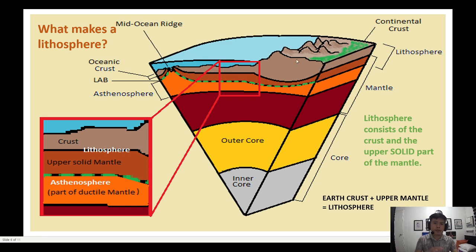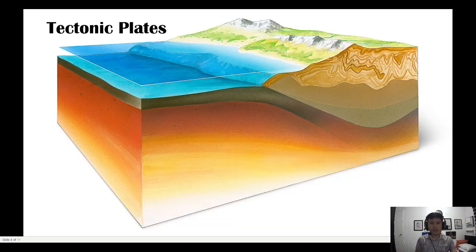You will see that the lithosphere is floating on top of a layer known as the asthenosphere. The asthenosphere is a weak layer found in the mantle, and this layer facilitates the movement of tectonic plates on top.